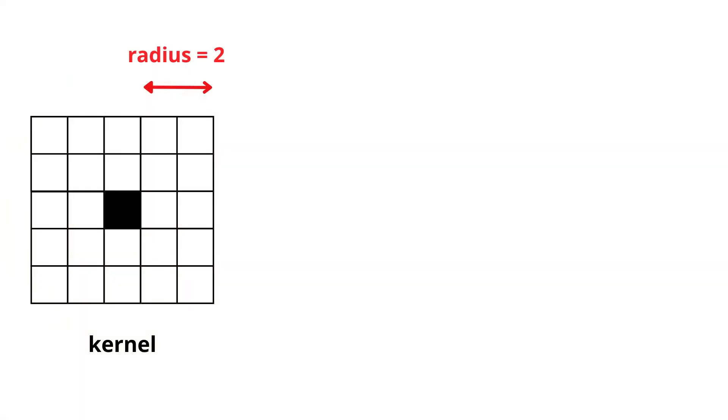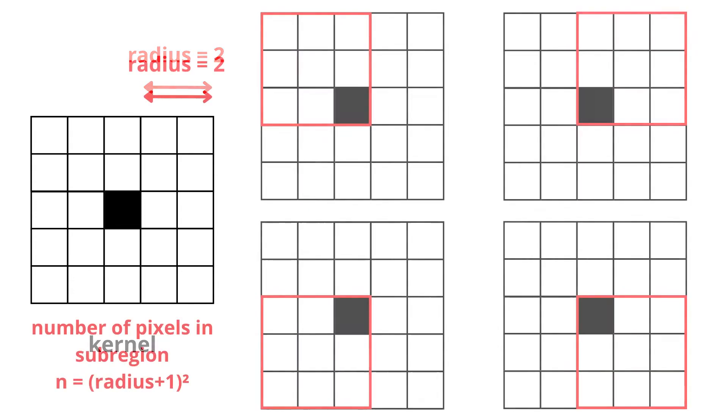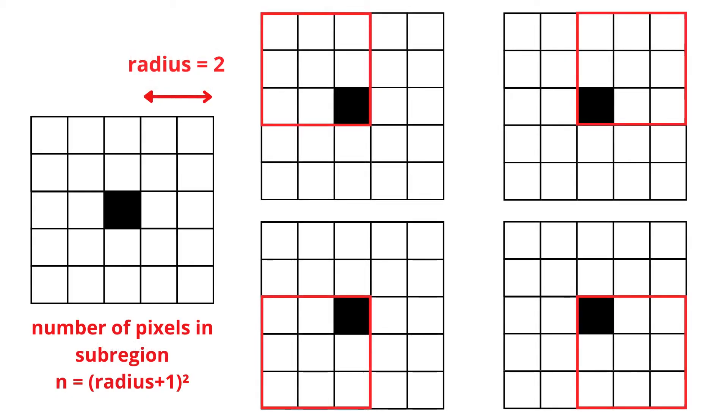Given a pixel from the input image that will be processed, we define a radius for a square region around it that will be used for calculation. We then split the region into four subregions around the central pixel: upper left, upper right, lower left, lower right.